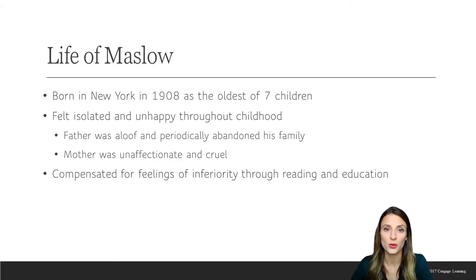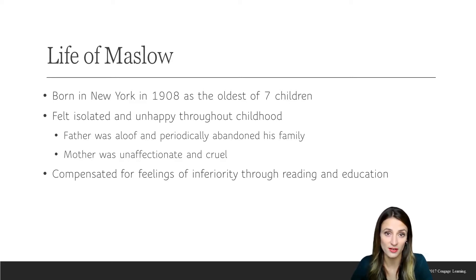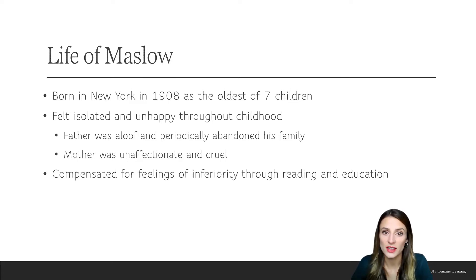Maslow was born in 1908 in New York. He was the oldest of seven children. Unfortunately, his father was rarely around, and his mother was punitive — she punished the children more than she showed them love. He described his mother as unaffectionate. He compensated for his feelings of isolation, loneliness, unhappiness, and inferiority by reading and through education.